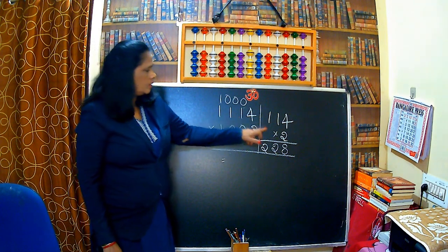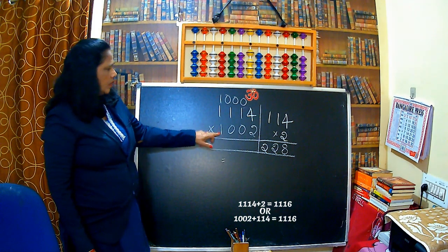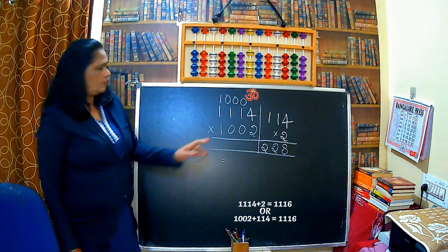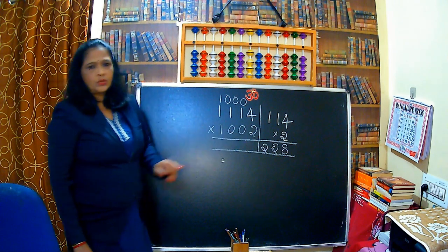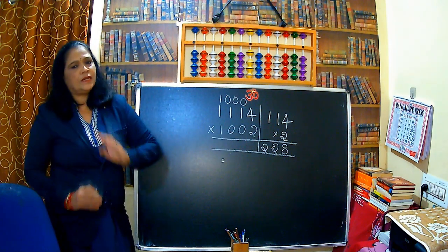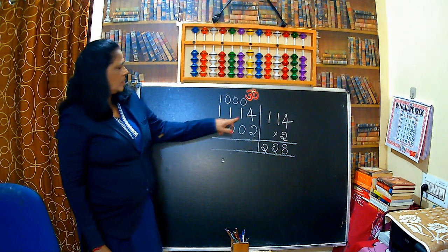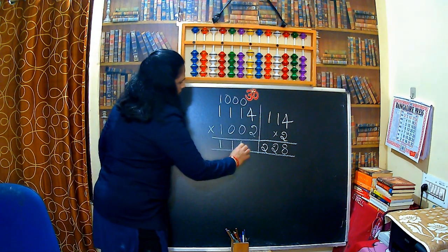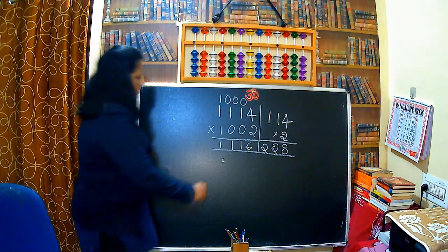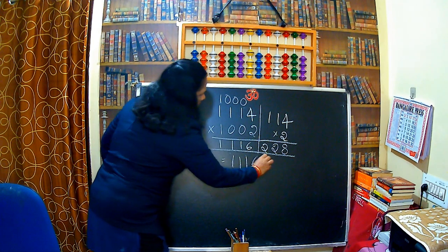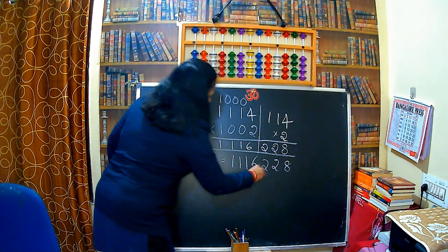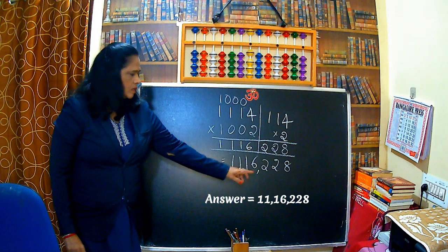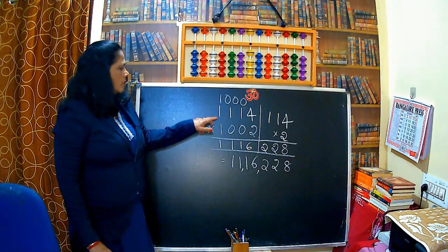So 1114 plus 2, or 1002 plus 114. If you add these two or add these two cross numbers, you will get the same answer. So the answer is 1116. 1116 in the left hand side. So the answer is 1,116,228.